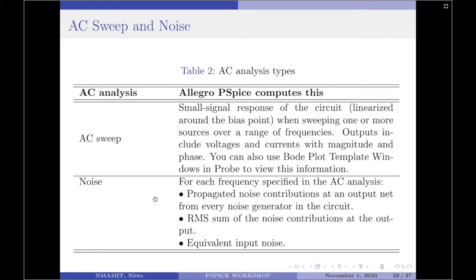Moving on to the AC sweep and noise analysis, these analyses evaluate circuit performance in response to a small signal alternating current source. Table 2 summarizes what the Allegro PSPICE calculates for each AC analysis type. If the type of the AC analysis is AC sweep, then the Allegro PSPICE computes the small signal response of the circuit when sweeping one or more sources over a range of frequencies. Outputs include voltages and currents with magnitude and phase.